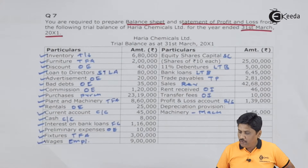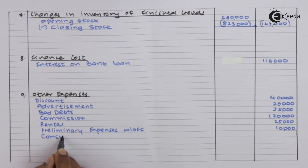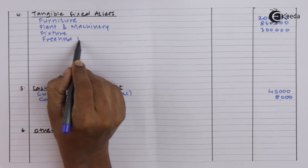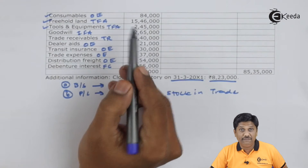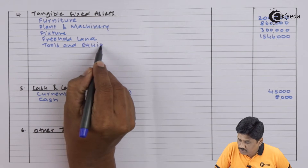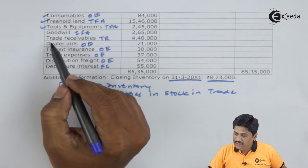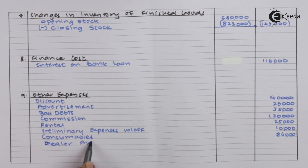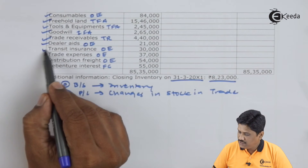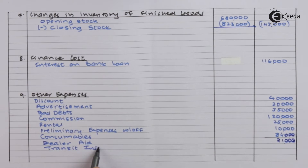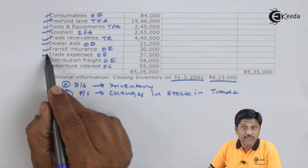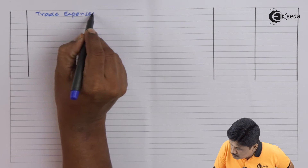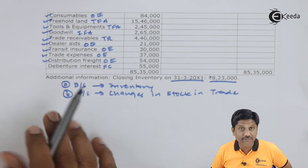Next amount: preliminary expenses — always written off as per AS 26. Fixture — your next amount to be written in tangible fixed asset. Wages — already noted as employee expenses. Consumables is your other expense. Freehold land is your tangible fixed asset. Tools and equipment is also your tangible fixed asset. Goodwill — intangible fixed asset, directly recorded. Trade receivable — already done. Dealer aid is your other expense. Transit insurance is also your other expense. Trade expense is also your other expense — I am finding this space short so continuing on the next page.